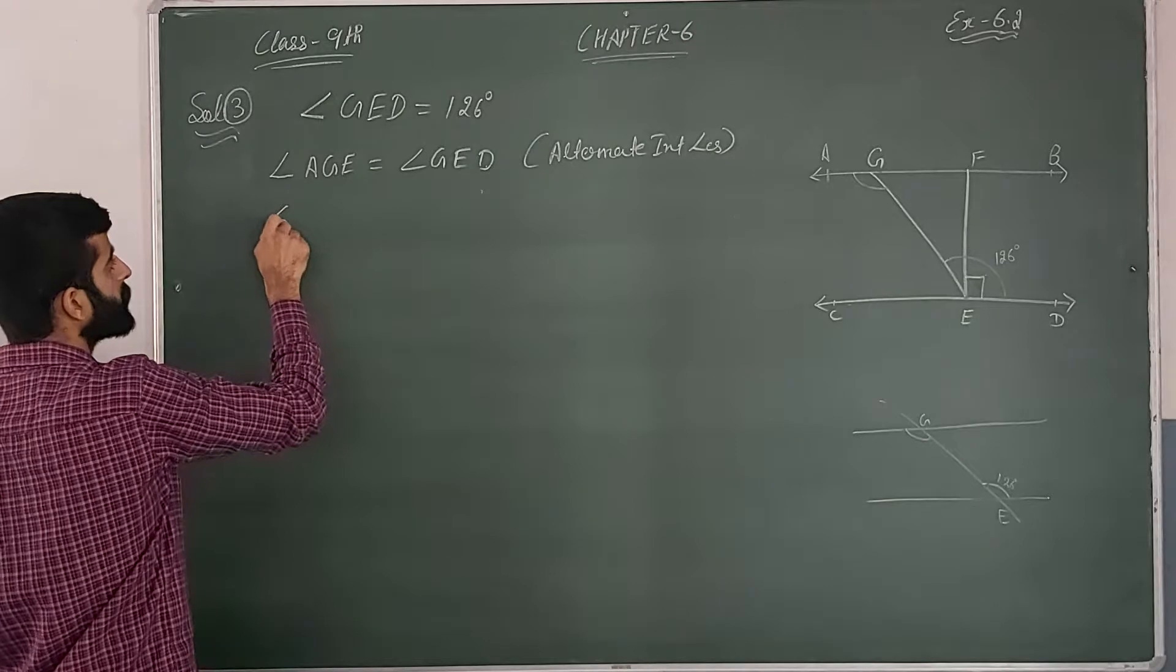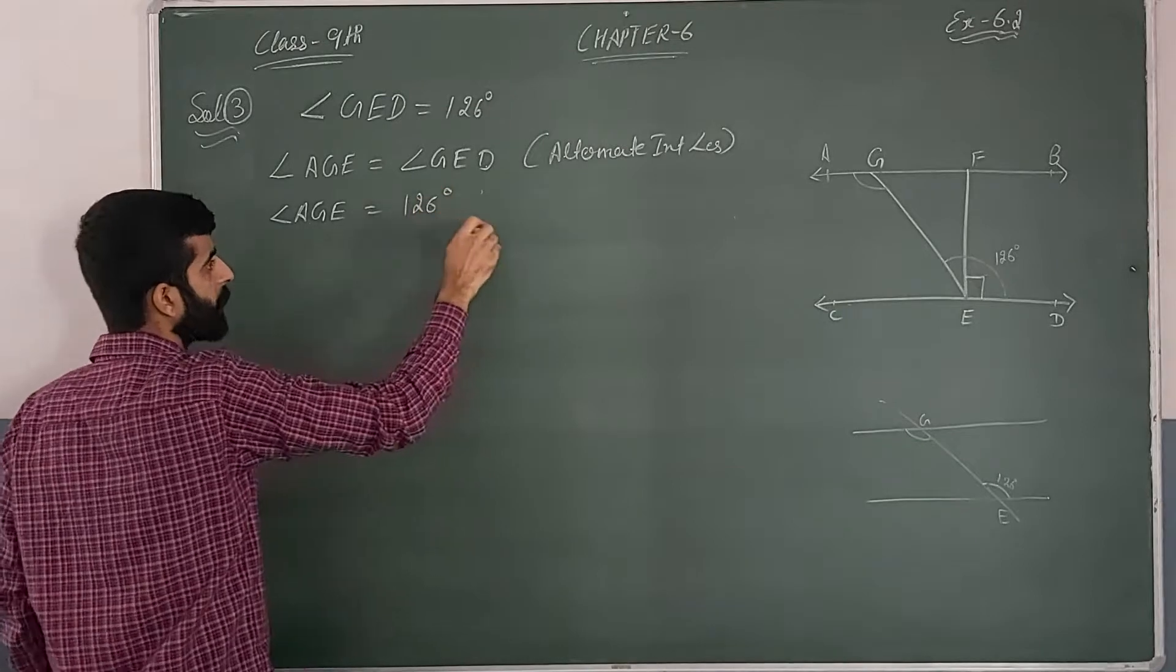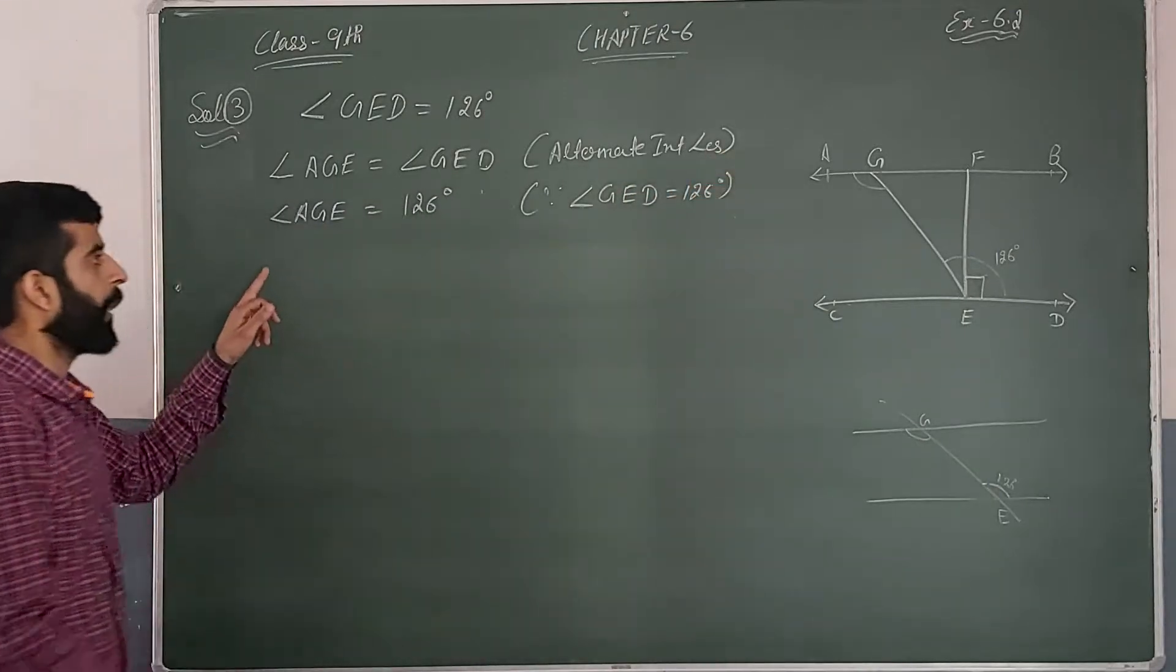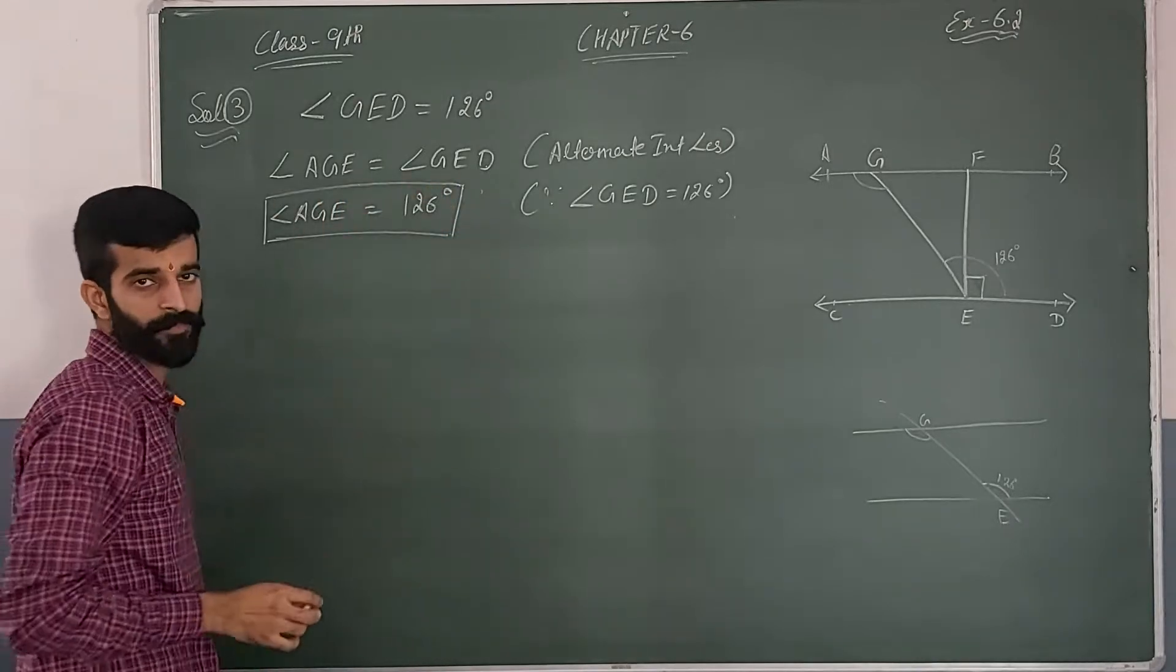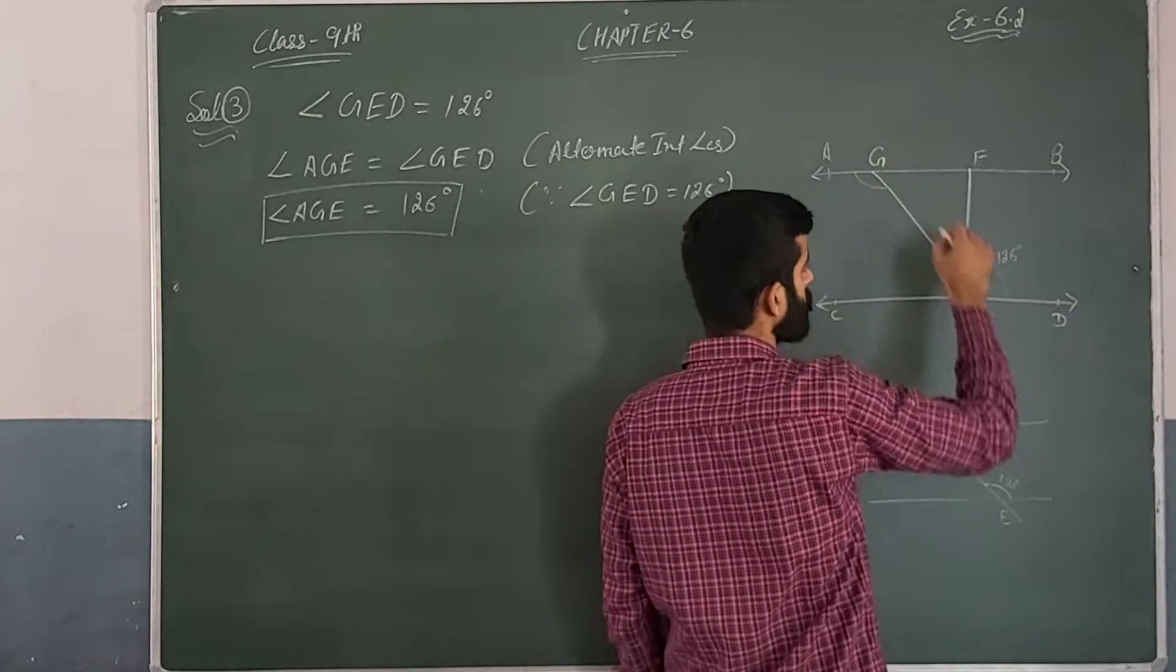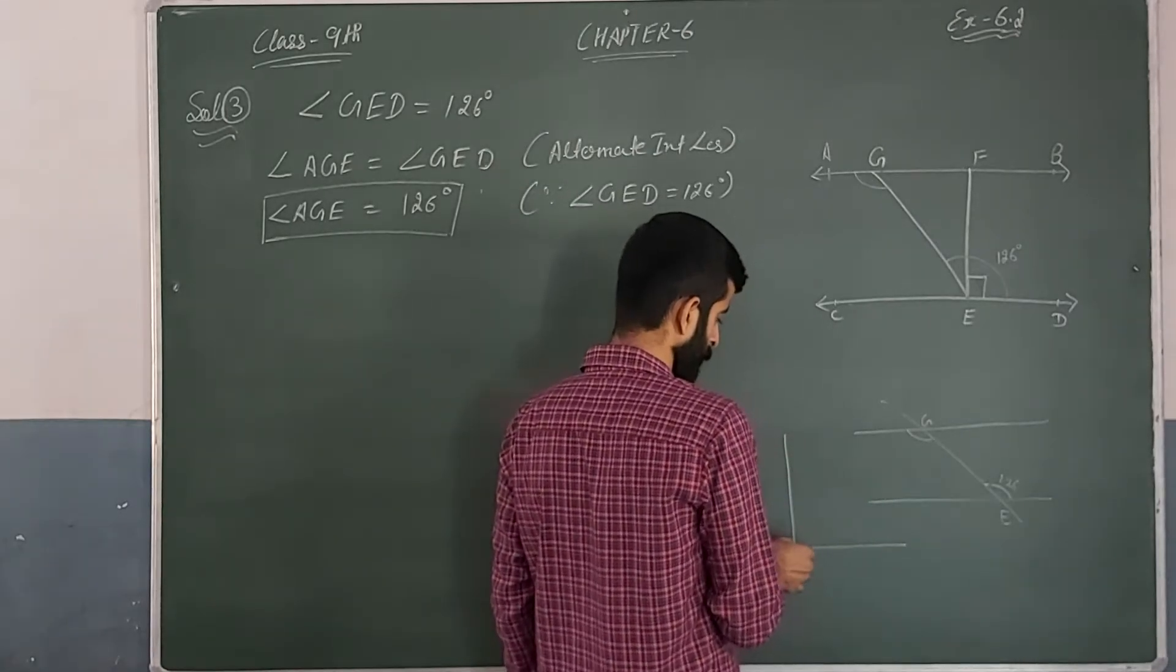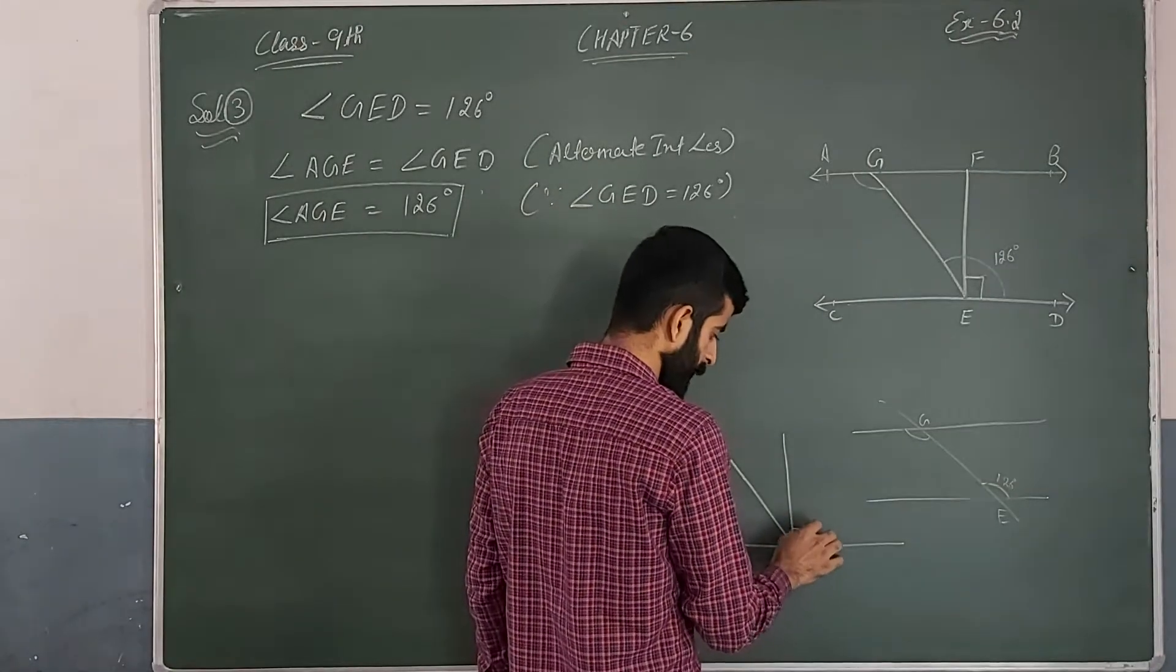So angle GED is equal to 126 degrees. Next we can find angle GEF. This is a line, and angle GEF is equal to 90 degrees.